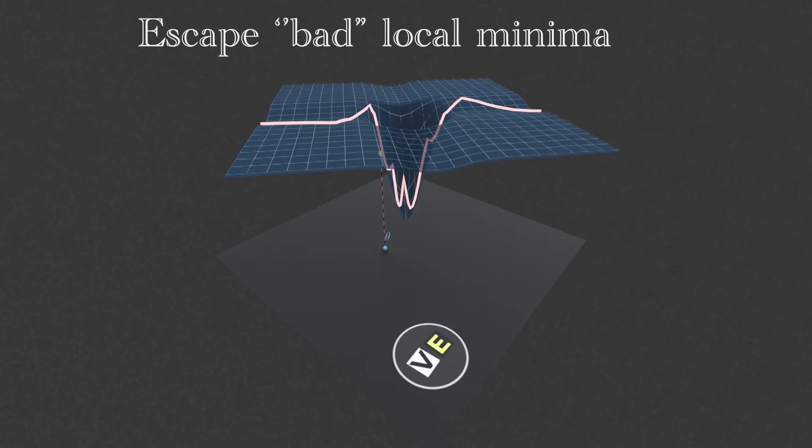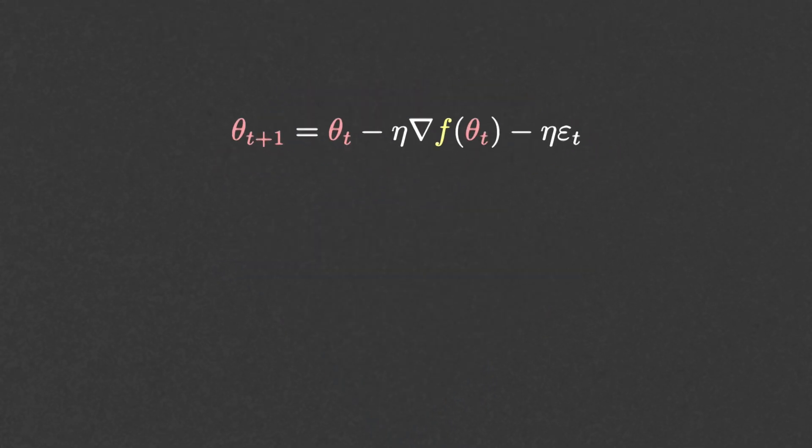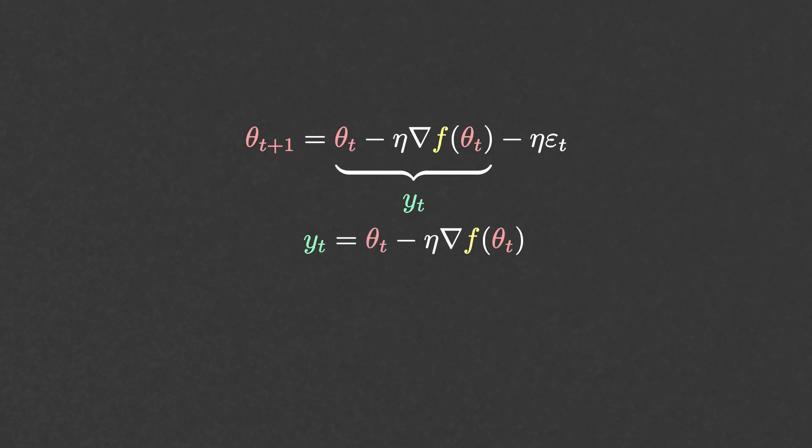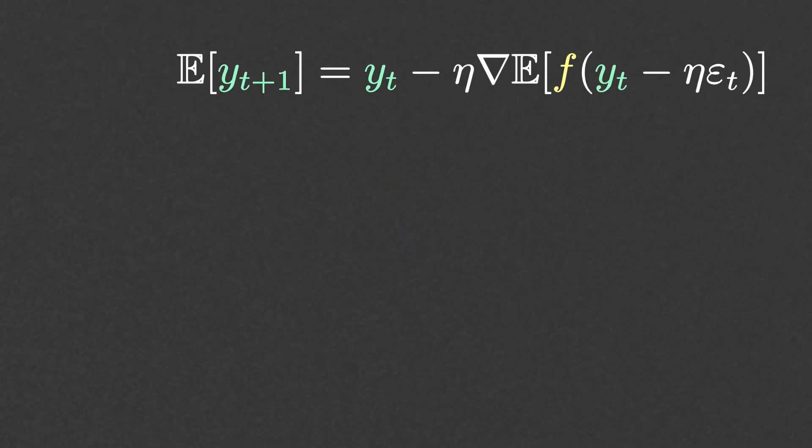But my favorite explanation is this one. If you look at one iteration of Stochastic Gradient Descent, and you perform this change of variables, then you can rewrite the iteration of Stochastic Gradient Descent as follows. Taking expectations with respect to the noise leads to this. Or in other terms, Stochastic Gradient Descent is just gradient descent in disguise applied to a smooth version of F.